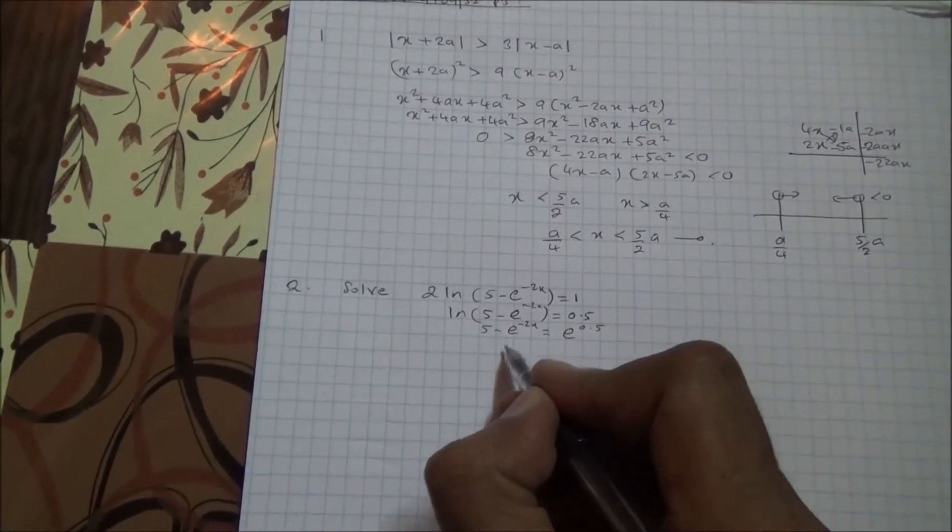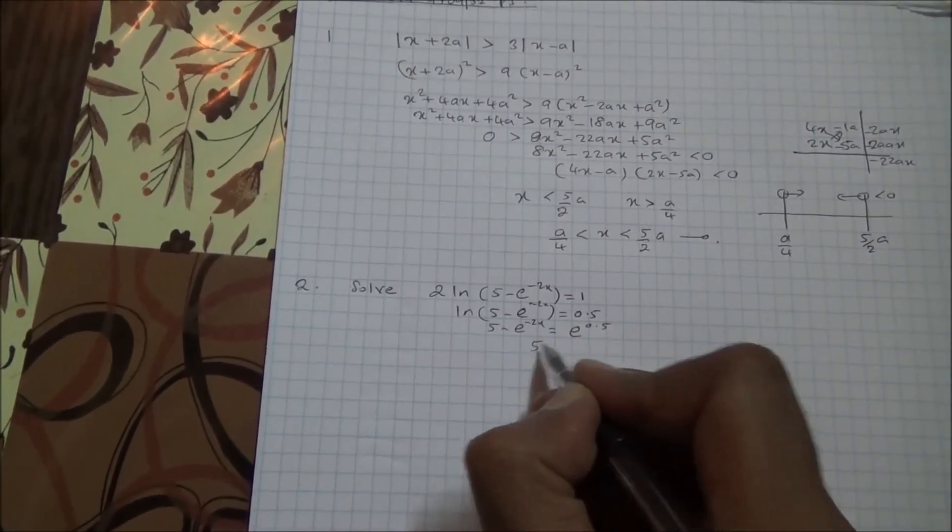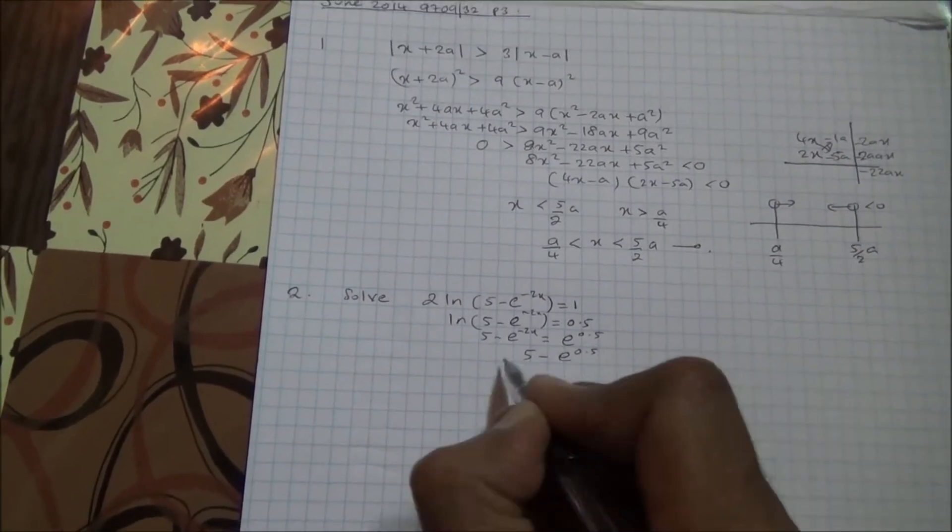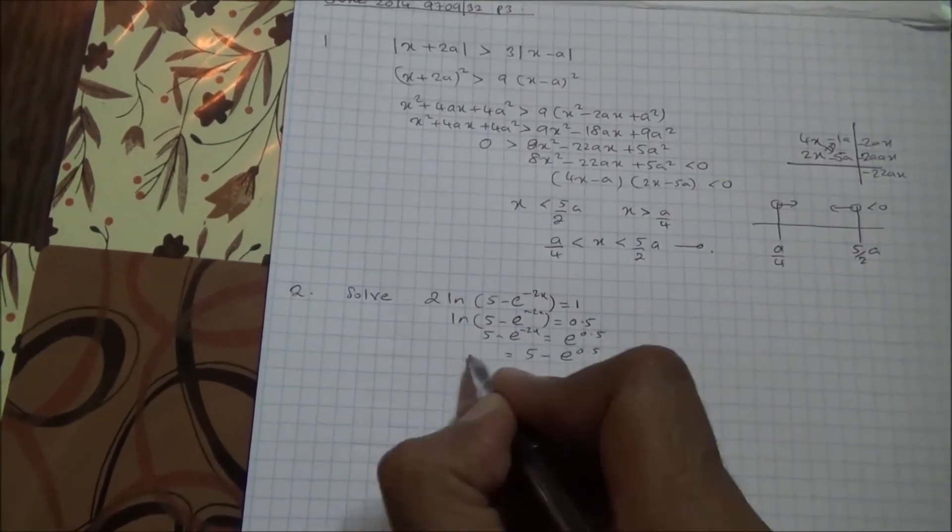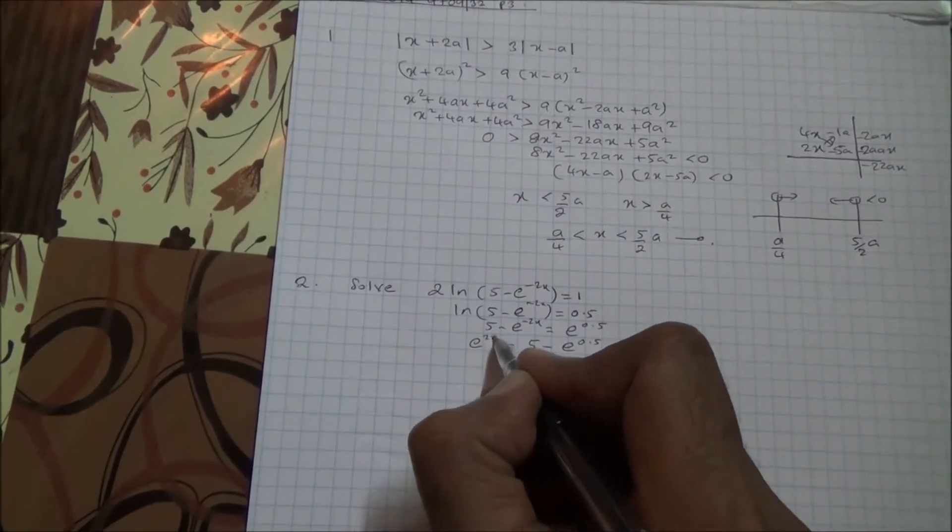And where do we go from here? I can send this on this side, it's going to become 5 minus e to the power of 0.5 is equal to—this can go on the other side—e to the power of minus 2x.